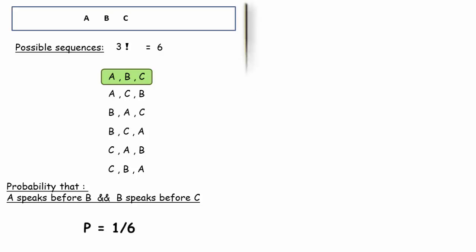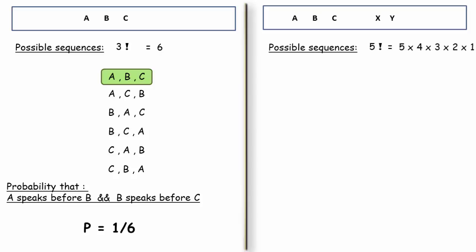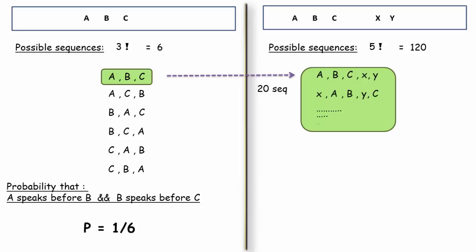Now, consider two persons X and Y join the arrangement whose order doesn't matter to us. Five persons. So, the possible sequences are 5 factorial. That's 120. Based on our previous case, we know that to have the same proportion, each sequence on the left side should map to 20 sequences on the right side because 120 sequences divided by 6 sequences is 20.